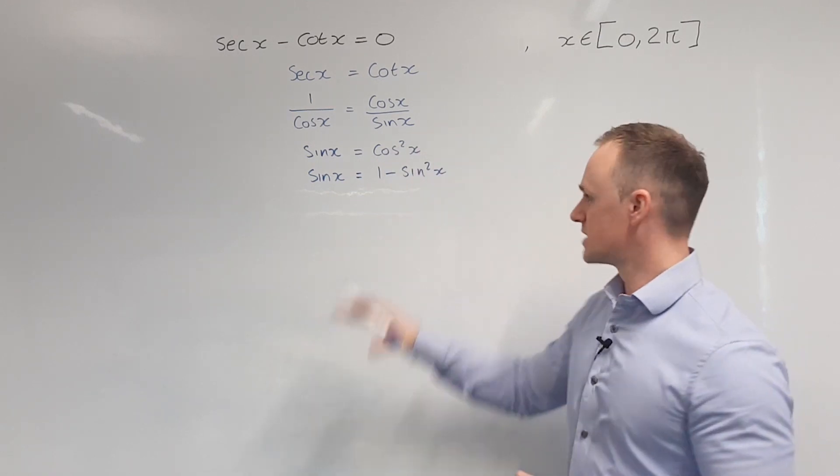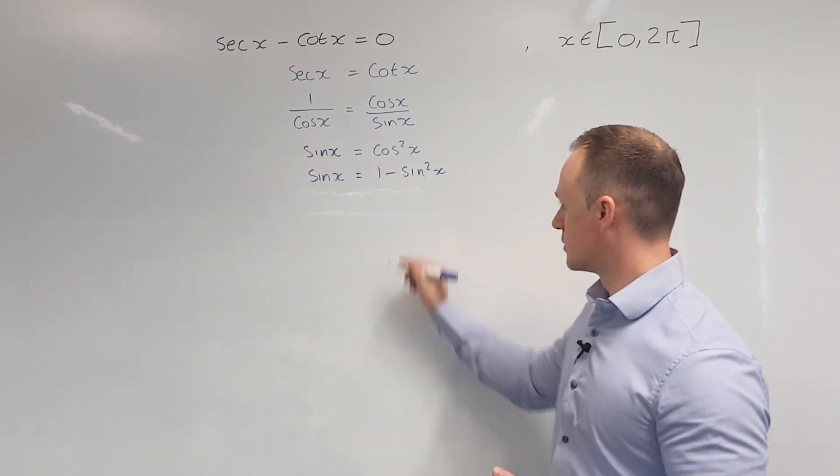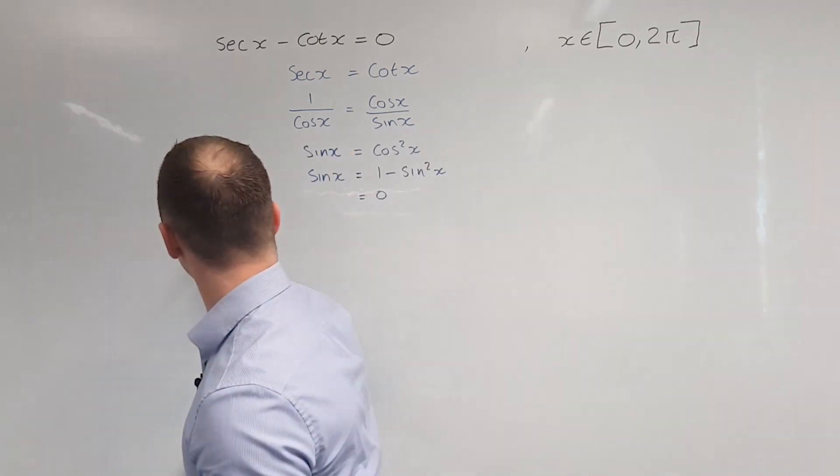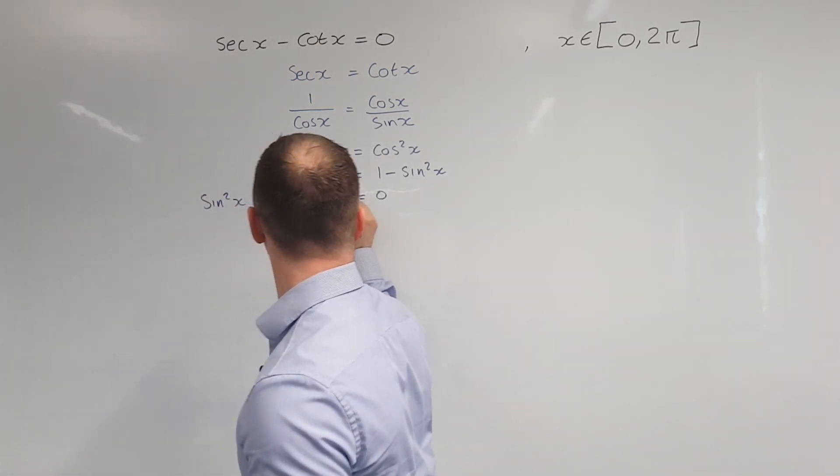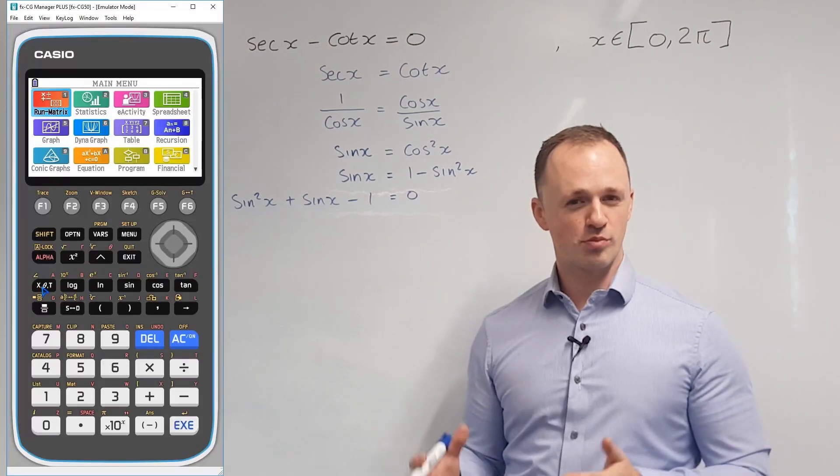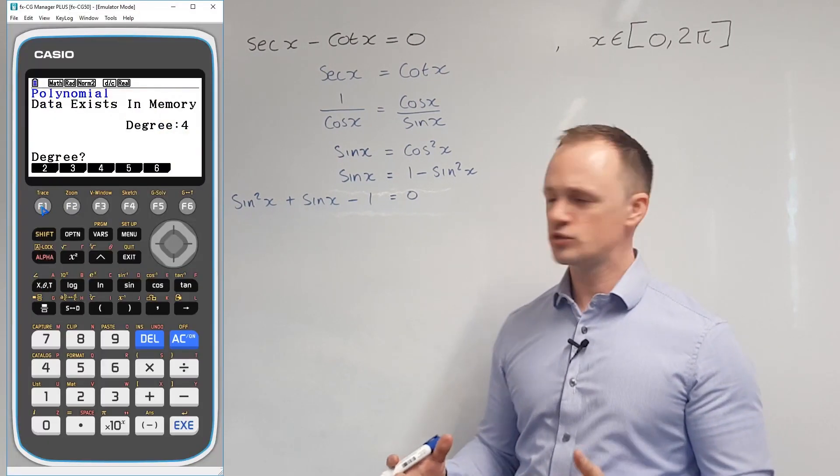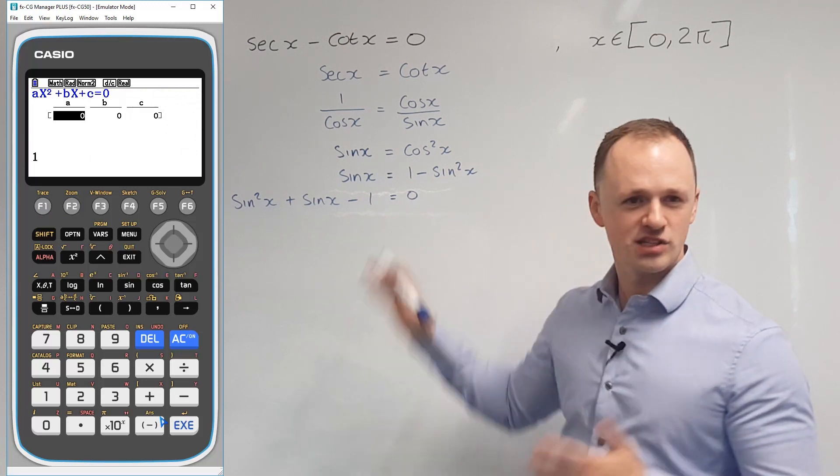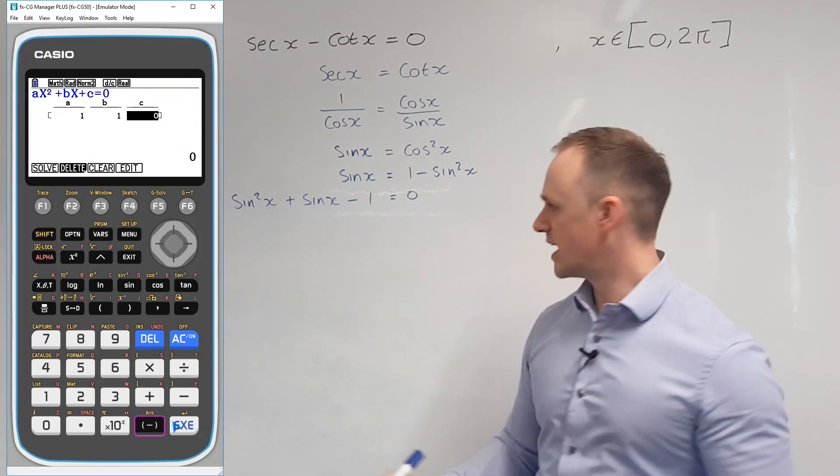From here, we can take everything over onto the left-hand side. And we have a quadratic to solve. This quadratic doesn't factorise, so we'll put it into our calculator to get the two solutions. Remember, we're not solving for x at this point. We're just solving for sine x.